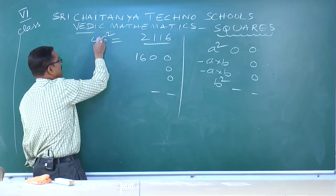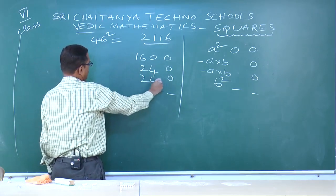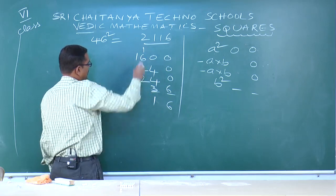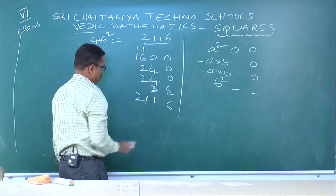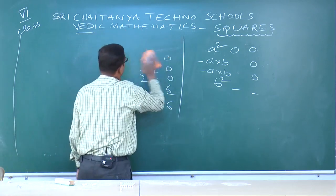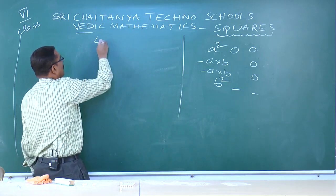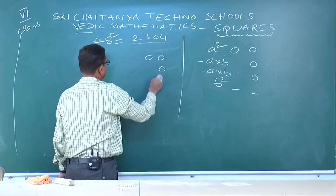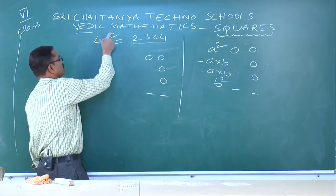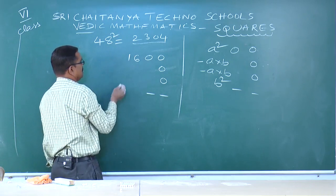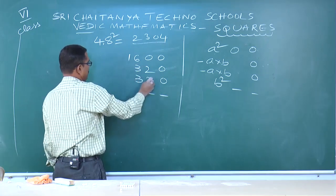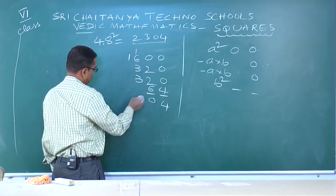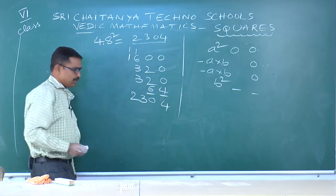Next: 48². Here a=4, b=8. Use formula: double-zero, single-zero, single-zero, dash-dash. a²=4²=16, a×b=4×8=32, a×b=32 again, b²=8²=64. Add: 4; 10; 13; 23 — answer is 2304.